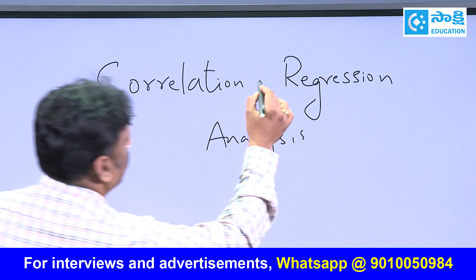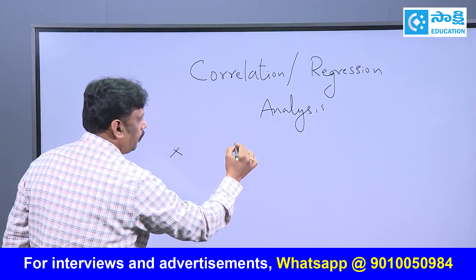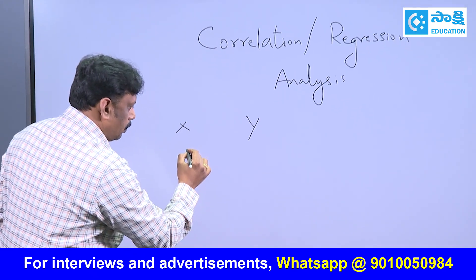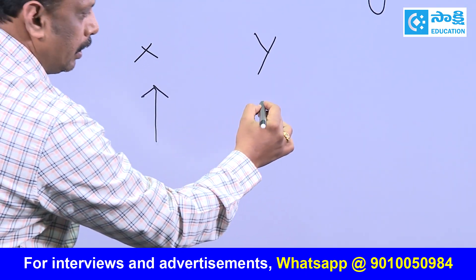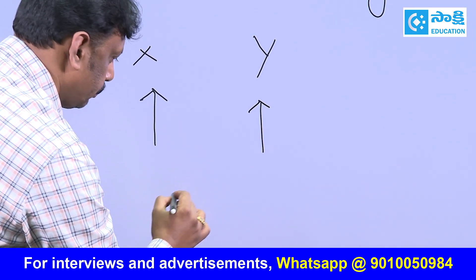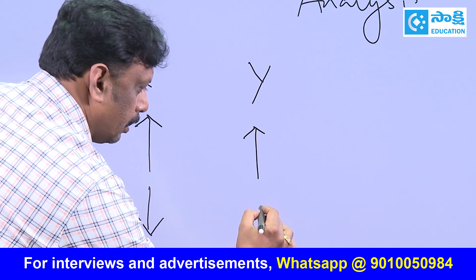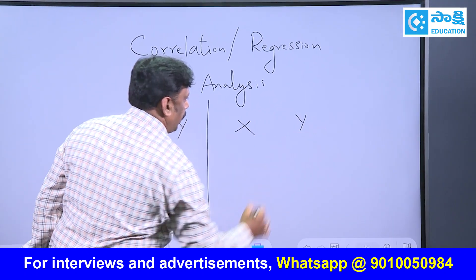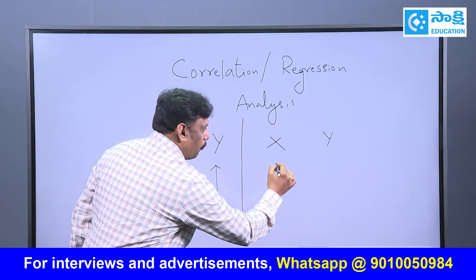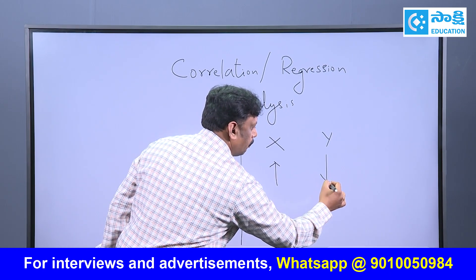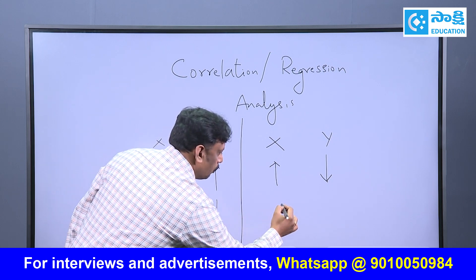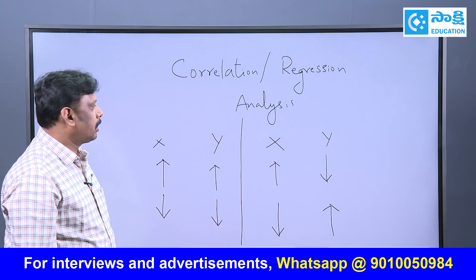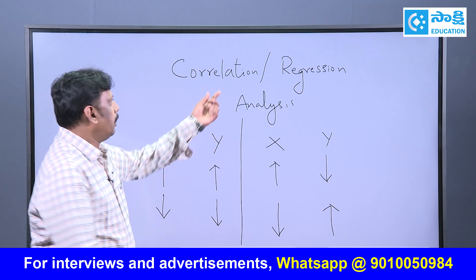Let us start about what is correlation. To understand, we will take two variables named as X and Y. If the values of X are in increasing order, then the values of Y will also be increasing, or if the values of X are decreasing then the values of Y are also decreasing. Alternatively, if the values of X are increasing, then the values of Y may be decreasing, and if the values of X decrease, the values of Y may be increasing.